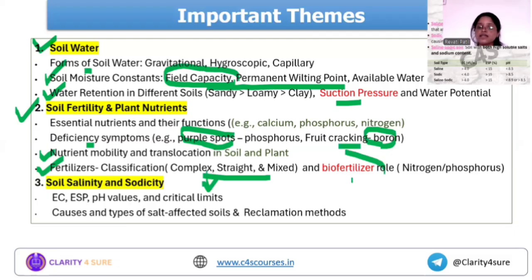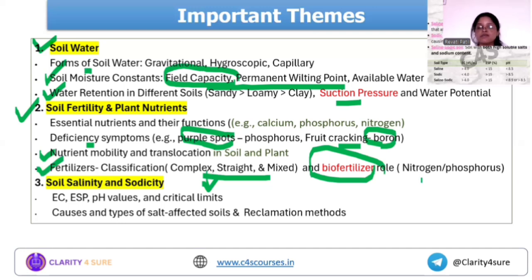Biofertilizers are the most important part — there is approximately one question every year on this topic. It could cover symbiotic nitrogen-fixing biofertilizers, phosphorus-mobilizing biofertilizers, etc. Questions may ask directly for examples — such as which biofertilizer is mostly used in cereals. Biofertilizers are becoming increasingly important.